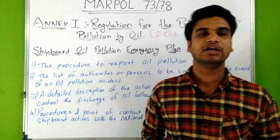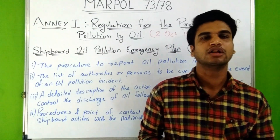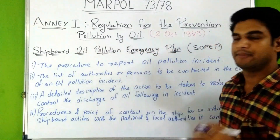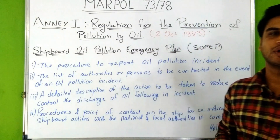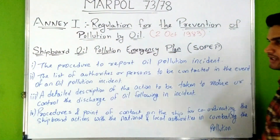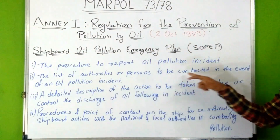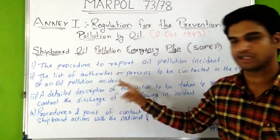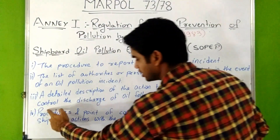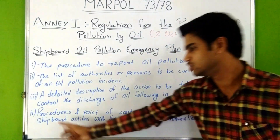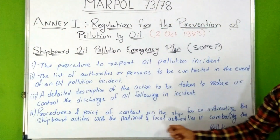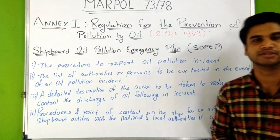SOPEP stands for Shipboard Oil Pollution Emergency Plan. Every oil tanker of 150 gross tonnage and above and all ships of 400 gross tonnage and above shall carry a SOPEP approved by the administration. It must include: procedures to report oil pollution incidents; a list of authorities or persons to be contacted in the event of a pollution incident; a detailed description of actions to reduce or control discharge; and procedures for point of contact on the ship for coordinating shipboard actions with national and local authorities.